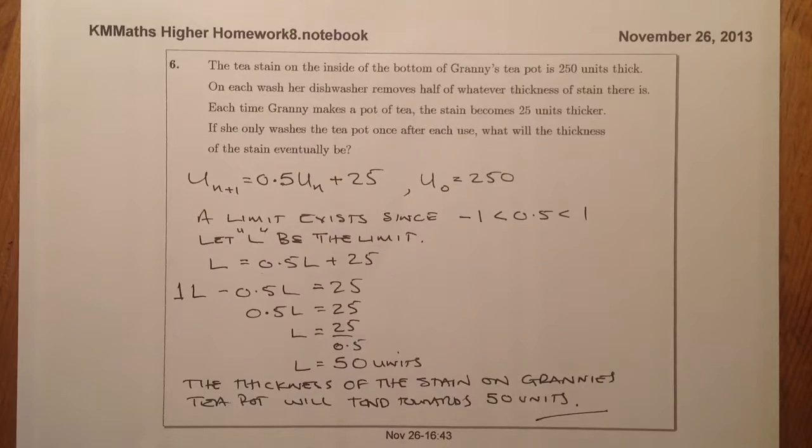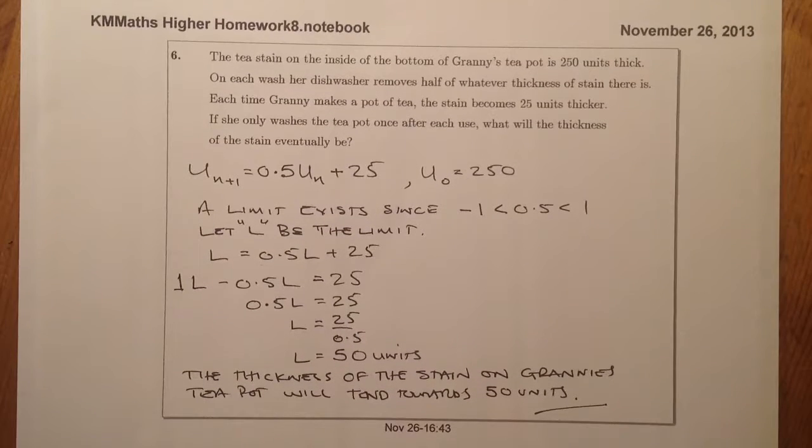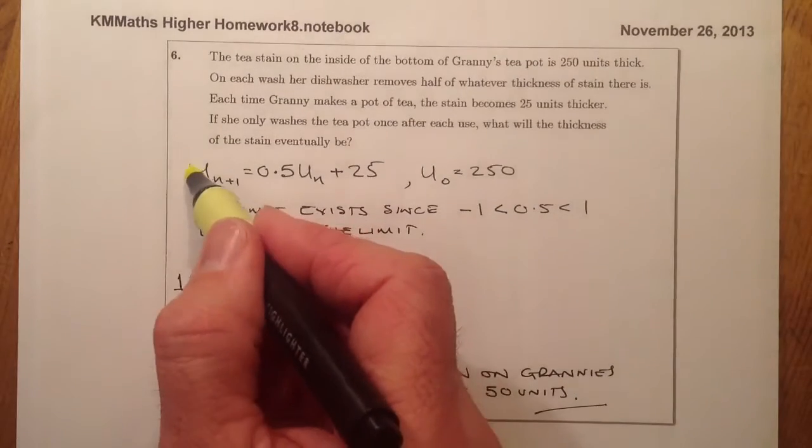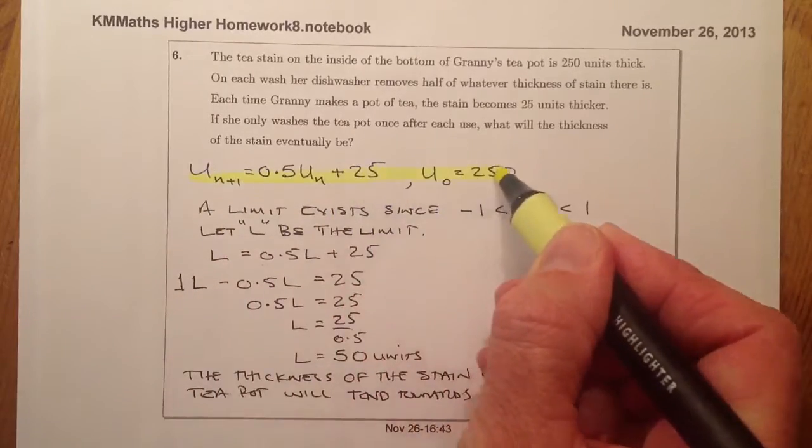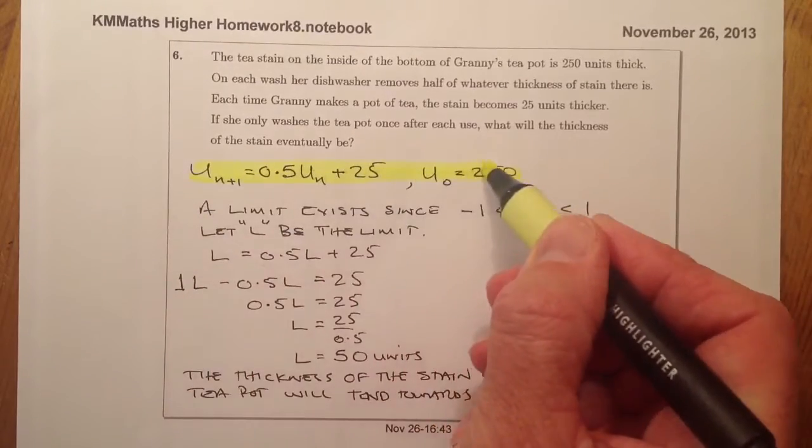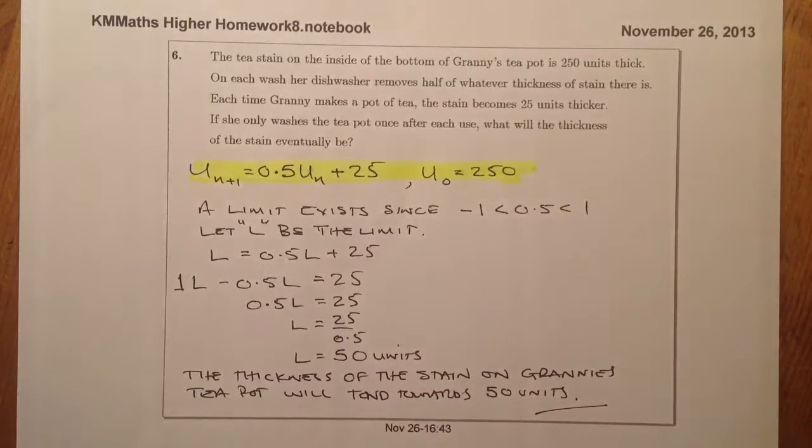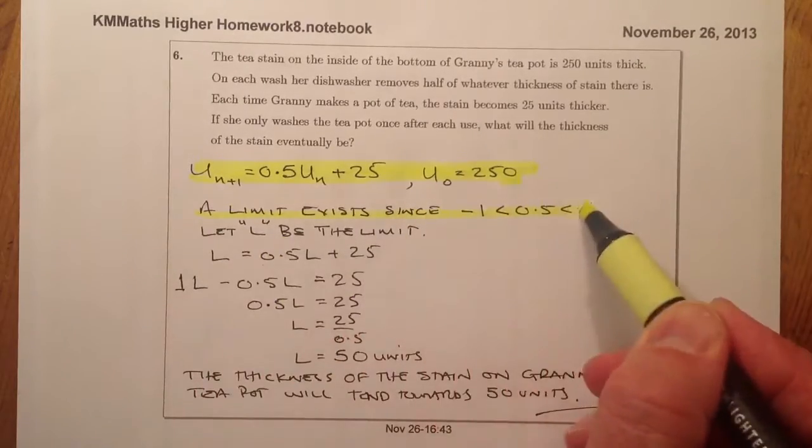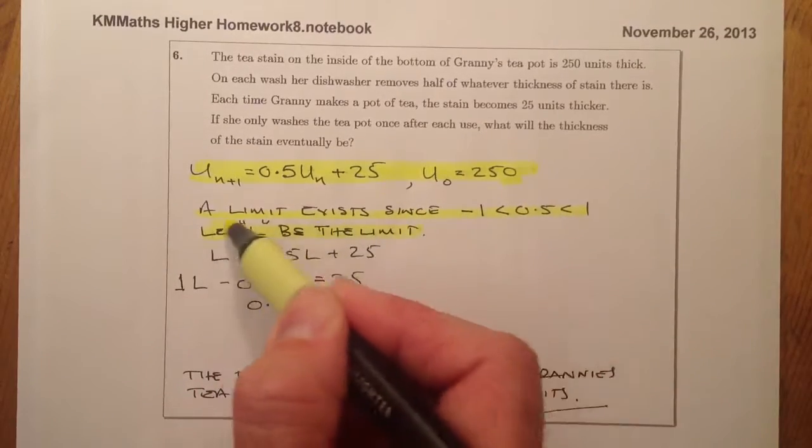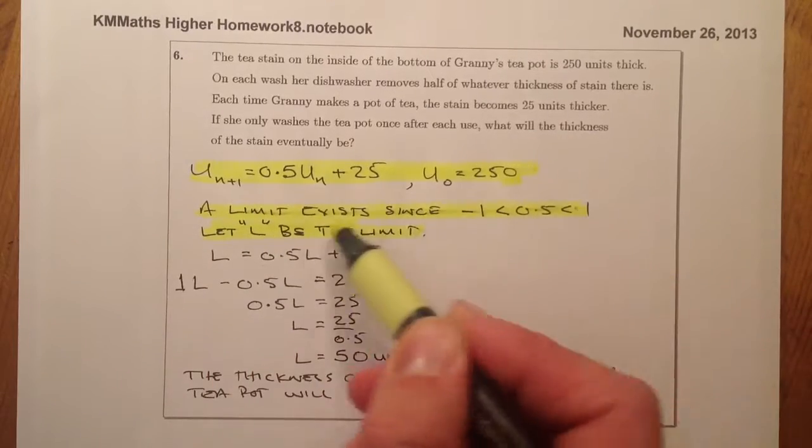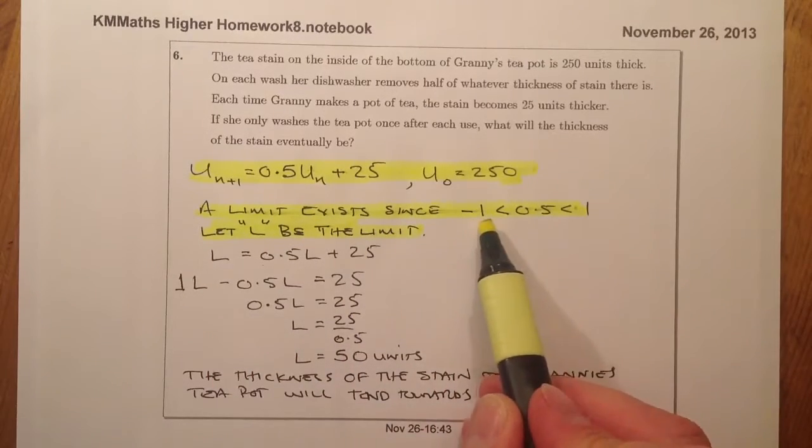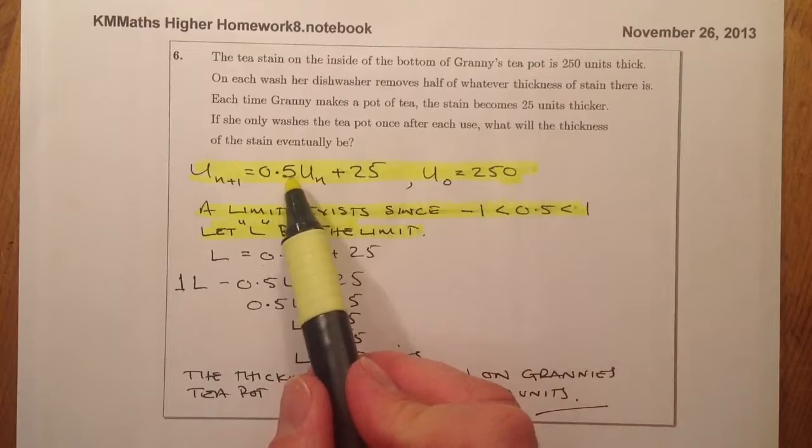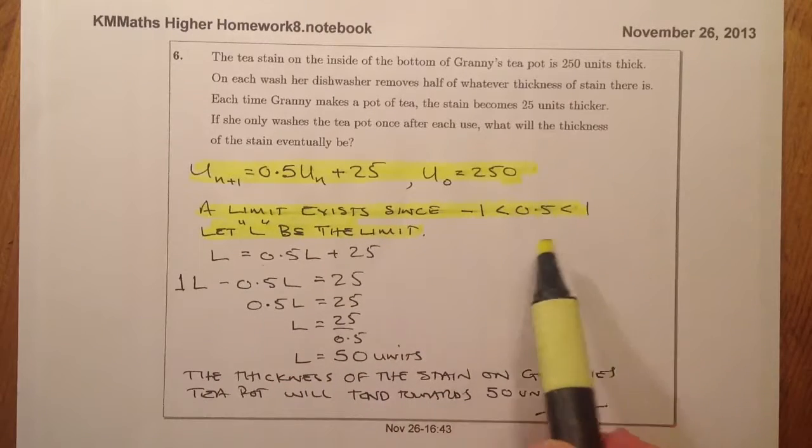So we'll go for a mark for getting the recurrence relation. What I'd like to look at here is getting the whole thing here. OK? That would be the first mark. The next mark will be for stating that a limit exists. OK? So mainly just a limit exists and also showing that the 0.5 lies in between minus 1 and 1.